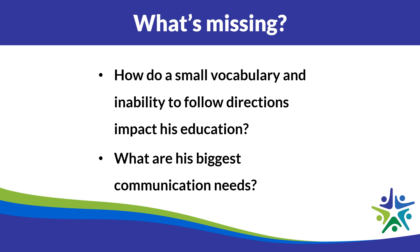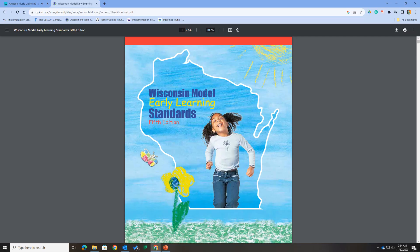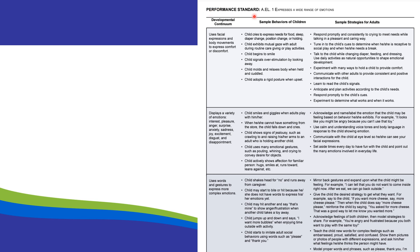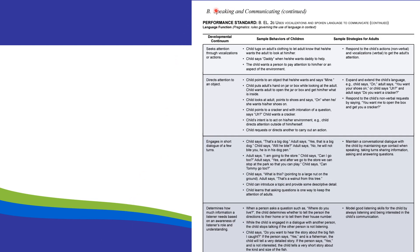One place we can look to understand that better is academic standards. The WEMOLs are broken down by different performance standards. Looking at a range of areas — emotions, social interactions and play — these are going to be very relevant for us. Next we have speaking and communicating standards, and we're going to spend some more time on those.